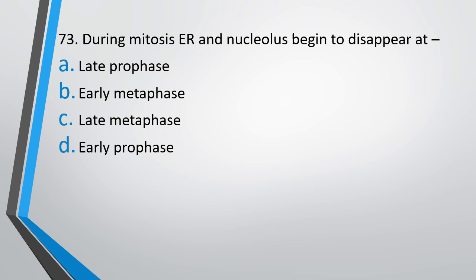Question number 73: During mitosis, endoplasmic reticulum and nucleolus begin to disappear at — late prophase, early metaphase, late metaphase, or early prophase. The correct answer is option A, that is late prophase.